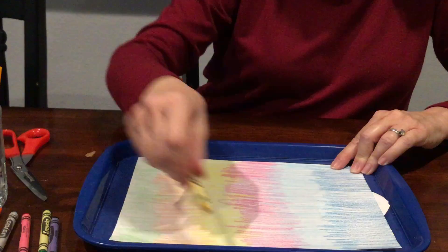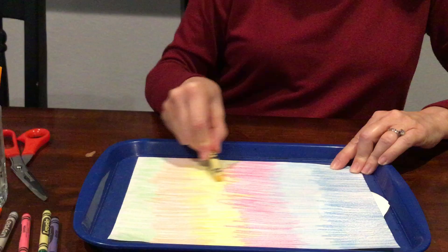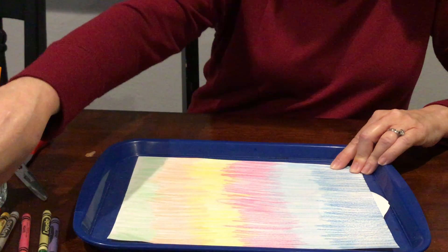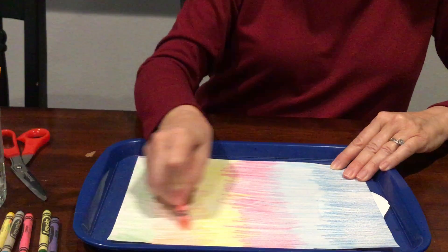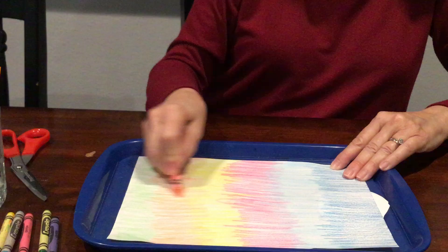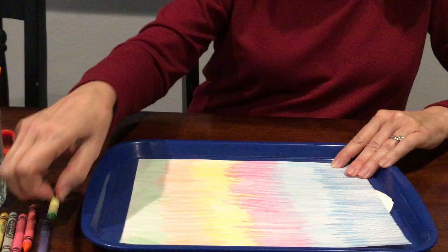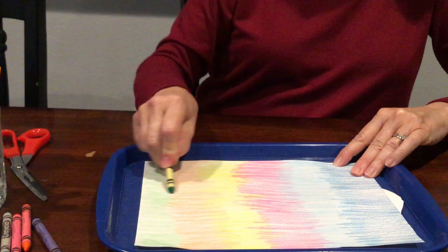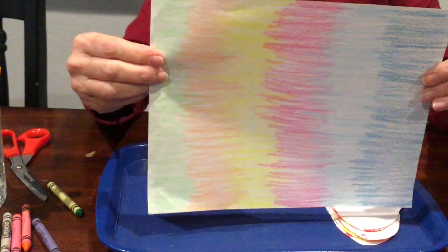My next color was yellow. I colored back and forth, and you can do big fat stripes of coloring or you could do skinny ones. You could do different colors than I did, whatever your favorite colors are. Orange was my next color and I went all the way down again, and then my last color was the green. I colored all the way across so now I have a paper that looks like this.